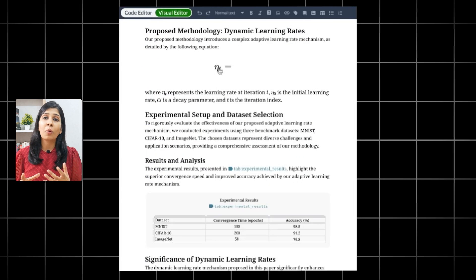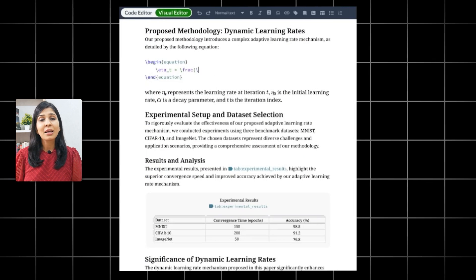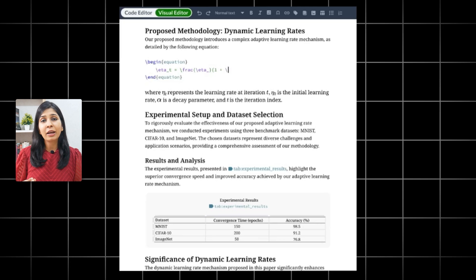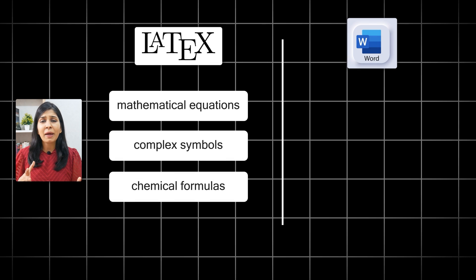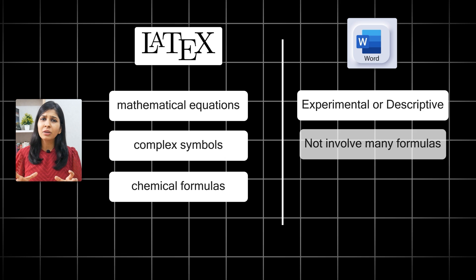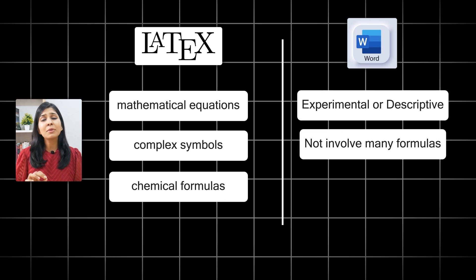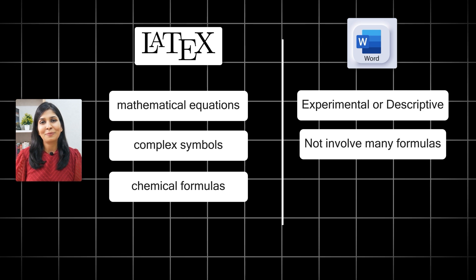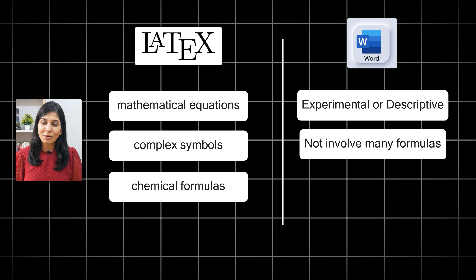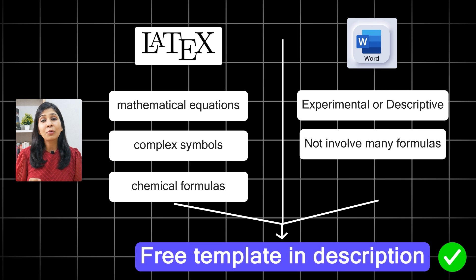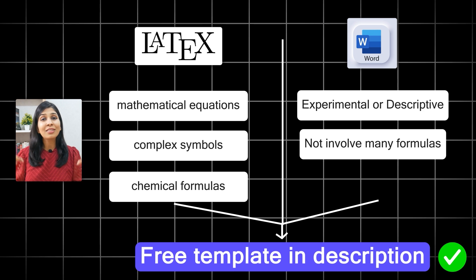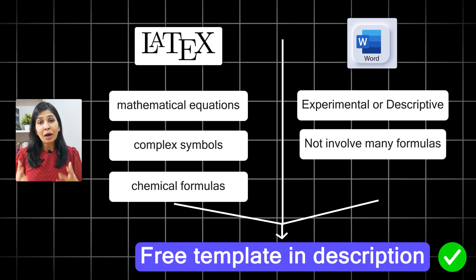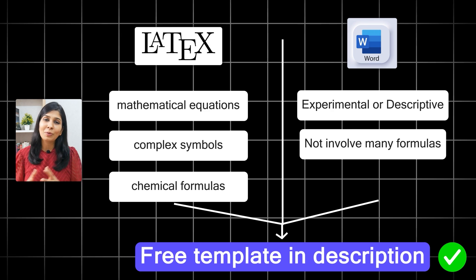If your research paper involves a lot of mathematical equations, complex symbols, or chemical formulas, then I would highly recommend that you go with Latex. However, if your research paper is more experimental or descriptive and does not involve too many formulas, then MS Word works just fine as well. If you are still confused between the two, I have linked the downloadable template for both Latex and MS Word in the description below, so you can download it to better understand what works for you.